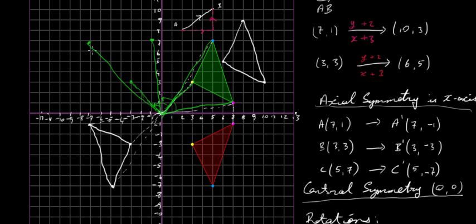Join up those three points and that's the image. You've taken the triangle and rotated the entire triangle 90 degrees in the positive, anti-clockwise direction. You can also rotate it 180 degrees or any angle you like, and you can rotate it in the clockwise direction as well. So that's transformation geometry — we've looked at four types: translations, rotations, central symmetry, and axial symmetry.